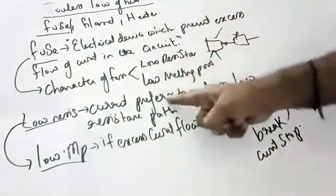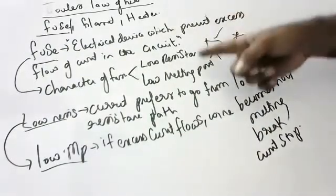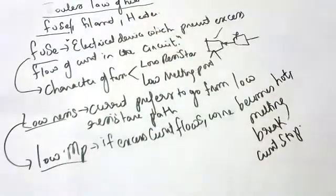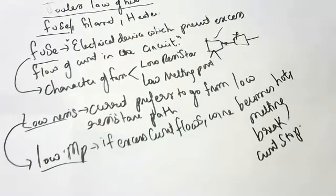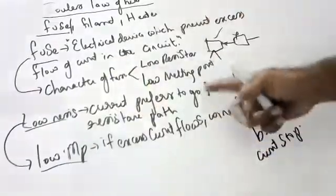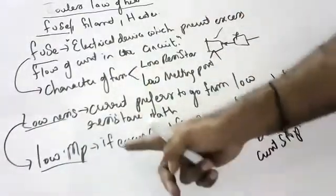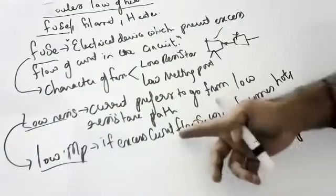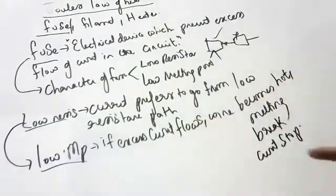So to summarize: definition — a fuse is an electrical device which prevents excess flow of current in a circuit. Characters: low resistance and low melting point. Why low resistance? Because current always prefers to go from a low resistance path. Why low melting point? If excess current flows, the wire becomes hot, starts melting, breaks, and stops the current.